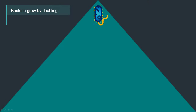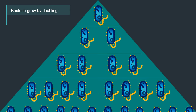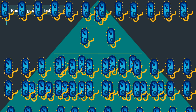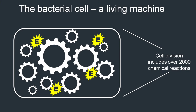A bacterial cell is able to grow by doubling — one cell doubles into two cells, these two cells double into four, into eight, into 16, and so on. The process of cell division is nevertheless a highly complex mechanism, including over 2,000 chemical reactions.